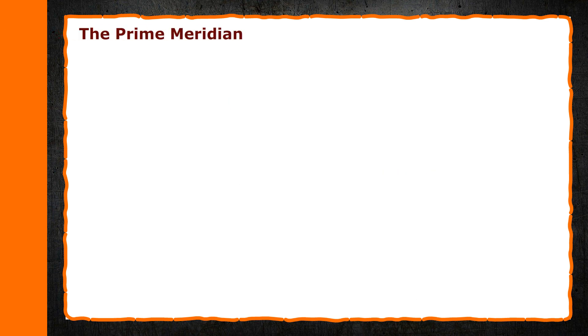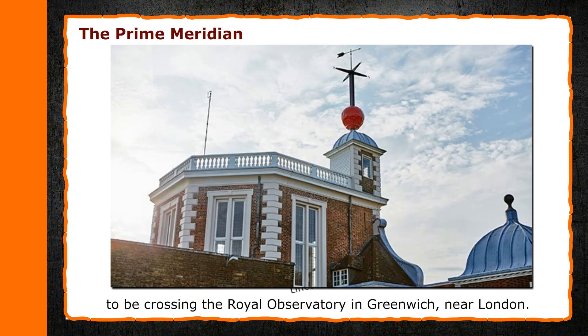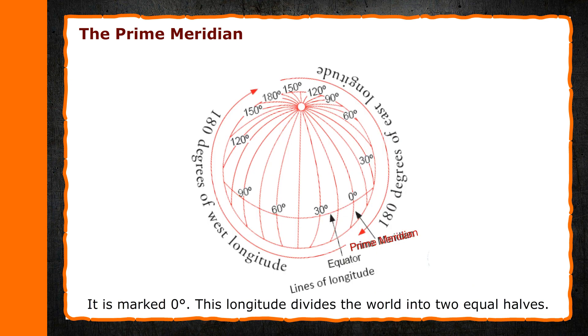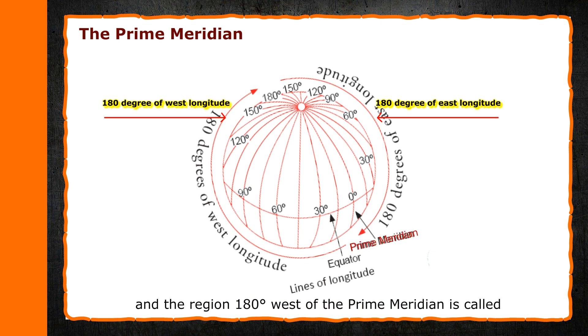The Prime Meridian. The Prime Meridian is the standard line of longitude assumed to be crossing the Royal Observatory in Greenwich near London. It is marked 0 degrees. This longitude divides the world into two equal halves. The region 180 degrees east of the Prime Meridian is called the Eastern Hemisphere and the region 180 degrees west of the Prime Meridian is called the Western Hemisphere.